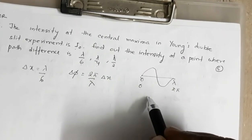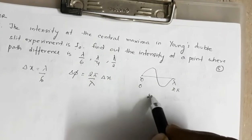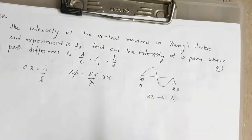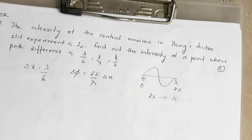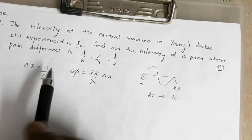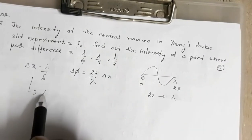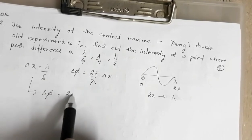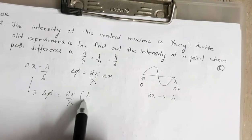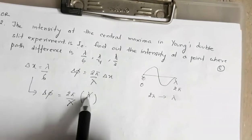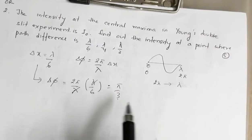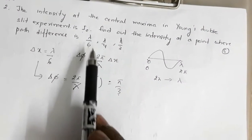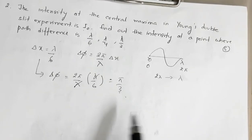Find the distance of the third bright fringe for λ = 520 nm from the central maximum, and the least distance from the central maximum where bright fringes due to both wavelengths coincide. The distance of a fringe from the central maxima is given by x = nλD/d, so the third bright fringe is at x = 3λD/d.